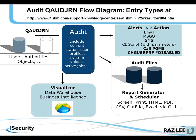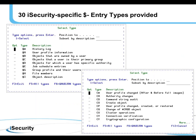We also produce audit files which our report generator and scheduler uses in order to send, for example, emails with HTML, PDF, CSV, or Excel attachments. We can look at the output at the GUI as well. I mentioned the iSecurity-specific entry types — on the left you'll see some of them. The ones that begin with $ are all iSecurity-specific entry types, while the ones on the right are examples of IBM-provided entry types.